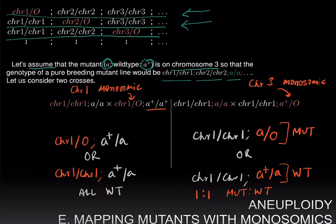So the process of mapping a mutant is to cross it to each of the monosomic lines. Whichever line gives you a 1:1 mutant to wild-type ratio tells you which chromosome the mutant is on, since it will be the chromosome for which that line is monosomic.